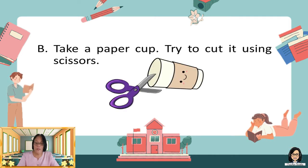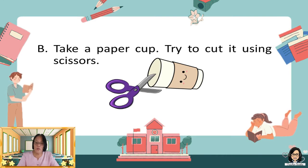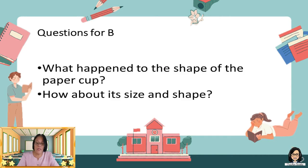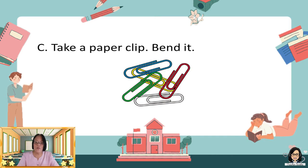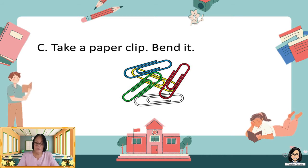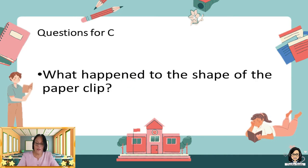Letter B: Take a paper cap. Try to cut it using a scissor. What happened to the shape of the paper cap? How about its size and shape? Letter C: Take the paper clip. Be careful in handling it. Bend it. What happened to the shape of the material?